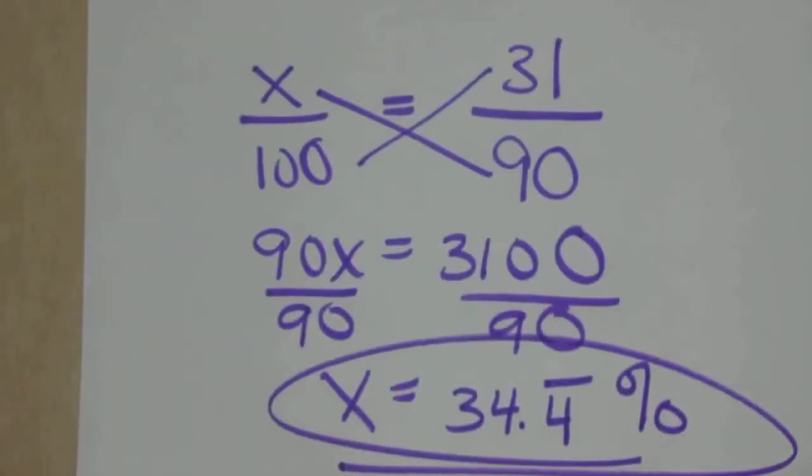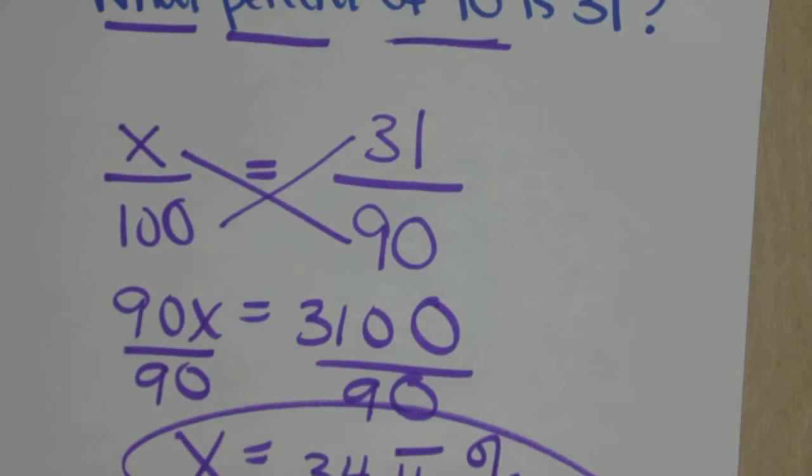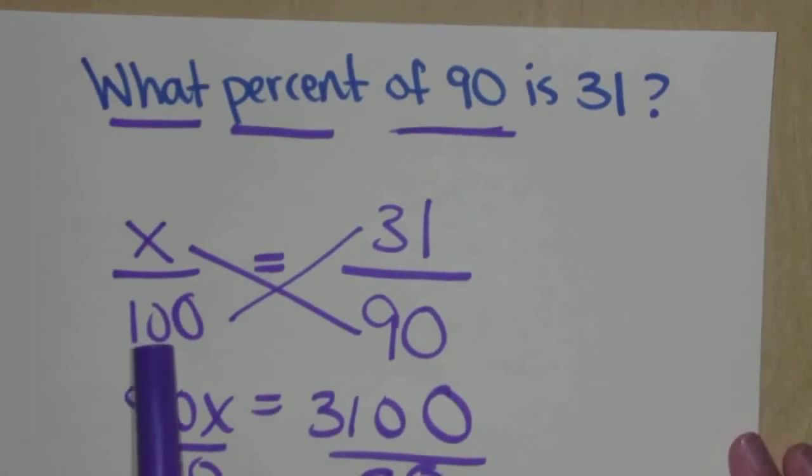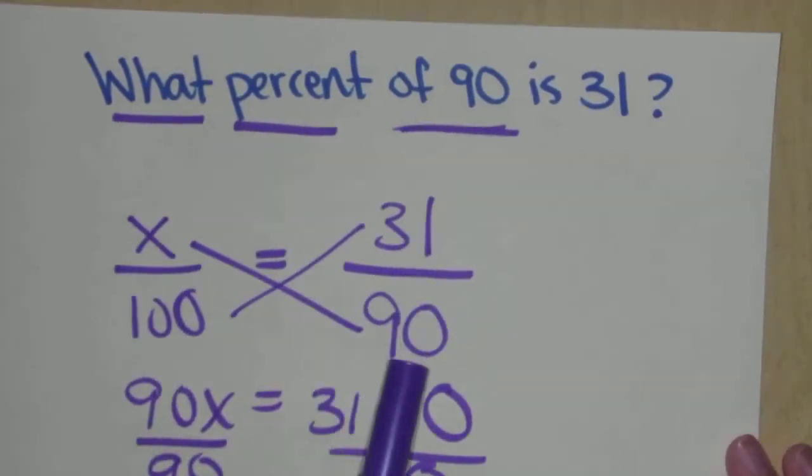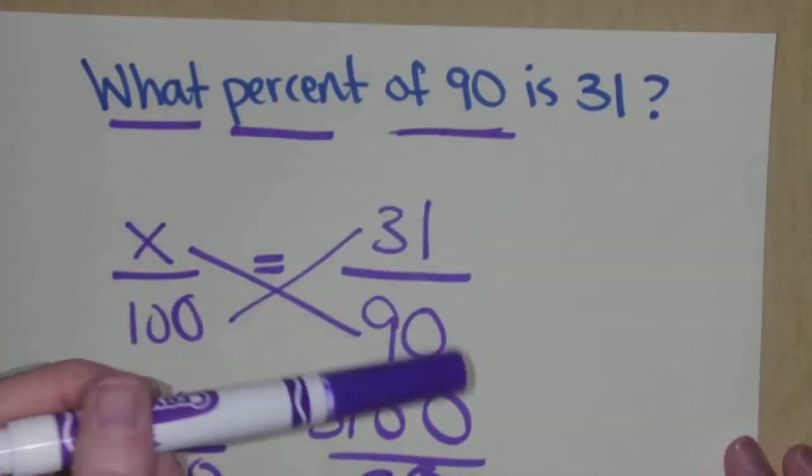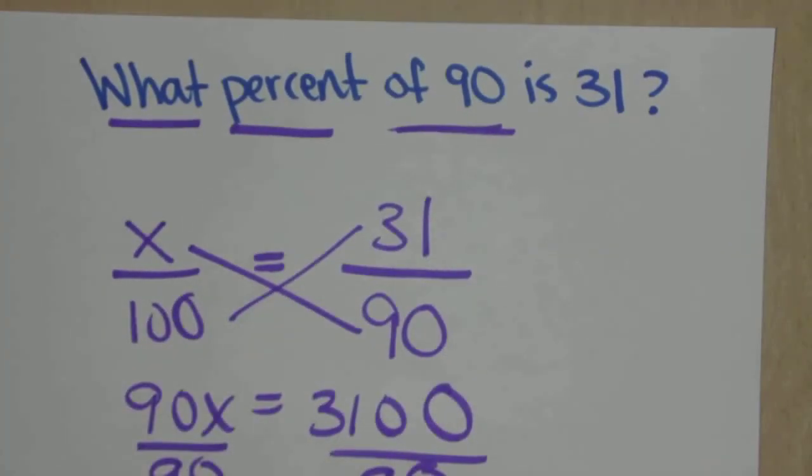I'm telling you, any problem that has to do with percentages, use this template. It will never steer you wrong. They can reword the problem any way they like. As long as you know your 100 goes in the lower left corner, your X fills one of the other spots - that's whatever you're looking for. And then you just have to filter in the other two numbers where they belong. As long as you do that correctly, you will never go wrong. Thanks for watching.